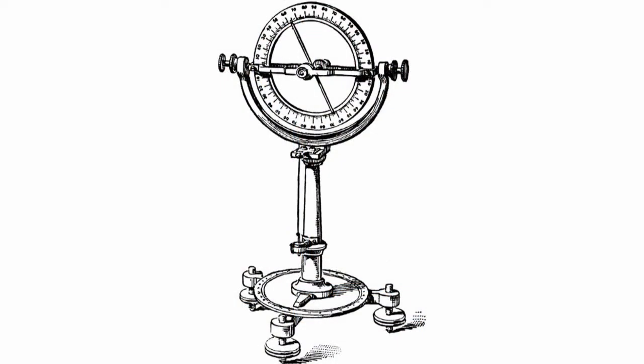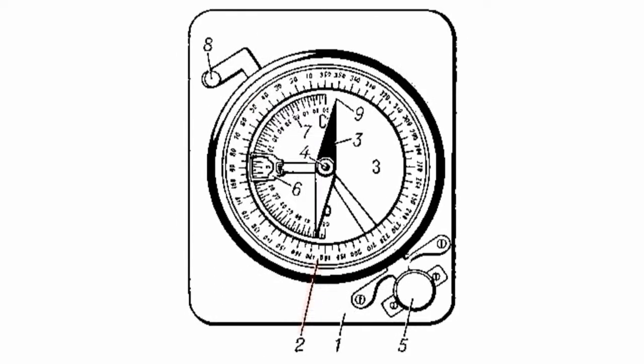An Inclinometer is a device for measuring angles of inclination, height or tilt of the rock bed relative to the ground level. In the simplest case, this tool consists of a magnetic needle and an axis needle, a vertical circle whose center coincides with the axis of the needle, a pendulum and a full horizontal circle located at the base of the tripod. The limb is divided into 360 degrees in a counter-clockwise direction.